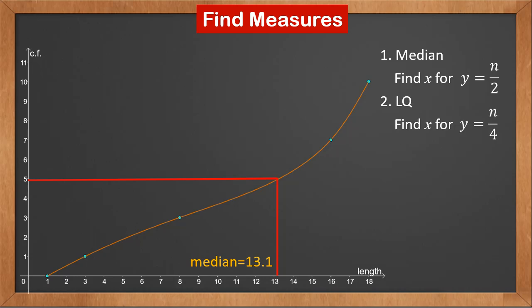Similarly, to find the lower quartile, we locate quarter n, 2.5, on the y axis, and find its corresponding x coordinate on the curve. It is approximately 6.6.